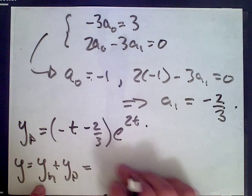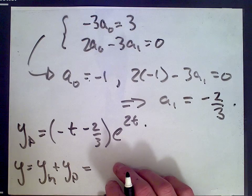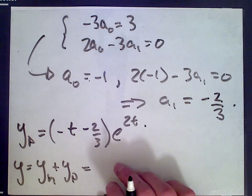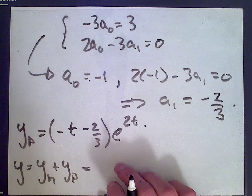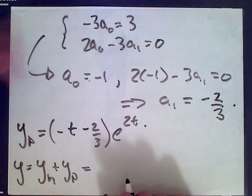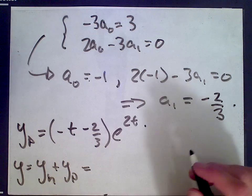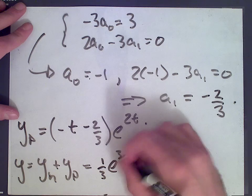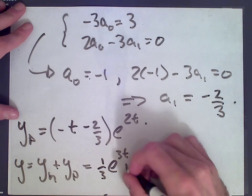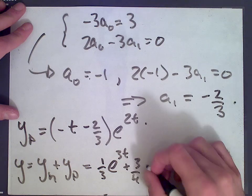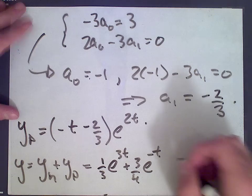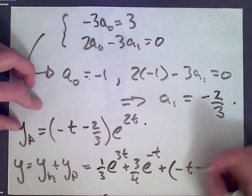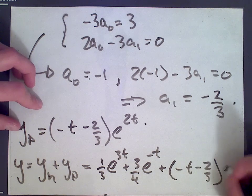The homogeneous solution makes the equation equal 0, and the particular solution makes it equal 3t times e to the 2t. So the general solution is: 1 quarter e to the 3t plus 3 quarters e to the negative t, plus our particular solution, which is negative t minus 2 thirds times e to the 2t.